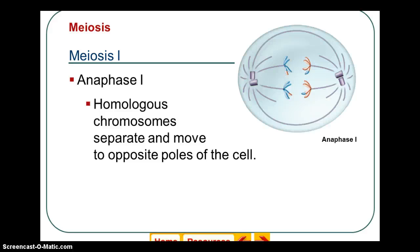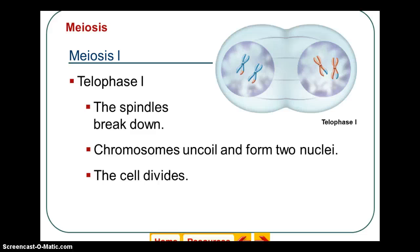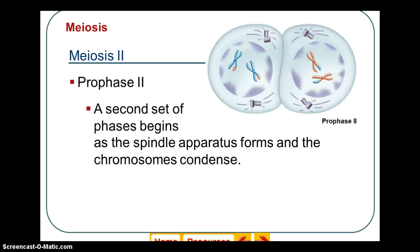Look carefully: in mitosis, chromosomes are separated, but in meiosis 1 during anaphase 1 they are not separated — the X's are moved as pairs. Then in telophase 1, two new nuclei form and the cell divides. Cytokinesis takes place right after telophase 1.